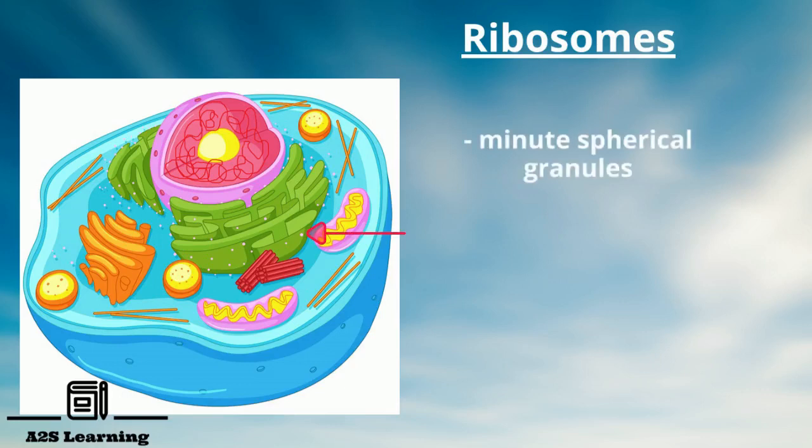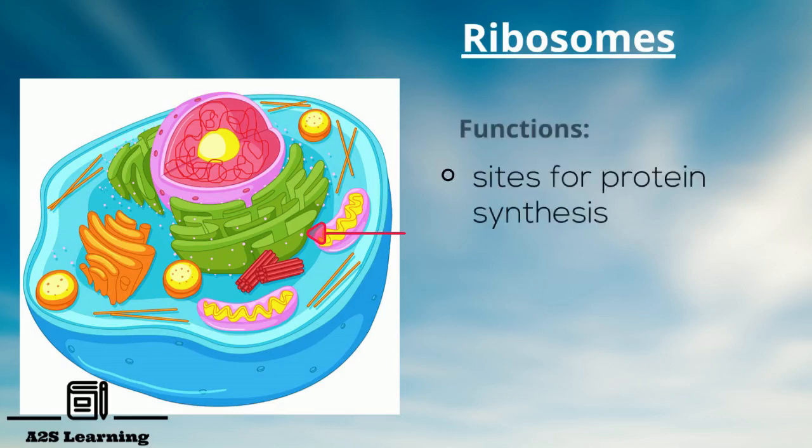Ribosomes: These are minute spherical granules attached to the endoplasmic reticulum. They are formed in the nucleus but mostly found in cytoplasm attached to endoplasmic reticulum. Ribosomes play major role in the synthesis of proteins. They are sites for protein synthesis.